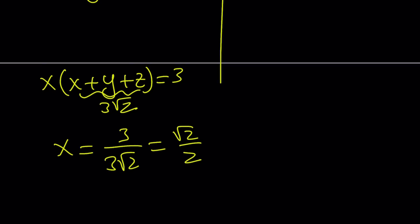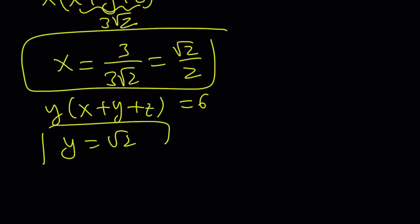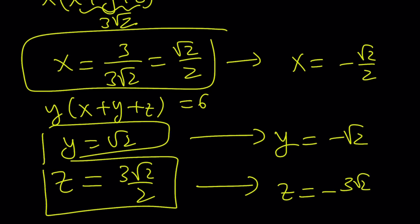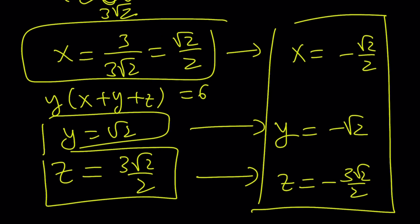And by using the second equation, y times x plus y plus z equals 6, you're going to get y equals root 2. Same thing. We don't have to go over that again. And for the third one, you're just going to get 3 root 2 over 2. And there are negatives, of course, from the negative side, the dark side of things. You're going to get the opposites. And z is going to be negative 3 root 2 over 2. So, basically, we have two ordered triples that are solutions with two methods.